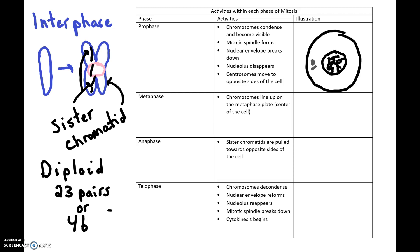Here are some of those centrioles — here's another pair of centrioles — and the mitotic spindle, also known as the spindle apparatus, begins to form from microtubules. It's ultimately going to be involved in separating the sister chromatids, pulling them to opposite sides of the cell — but that happens in anaphase. The third bullet: the nuclear envelope breaks down and the nucleolus disappears as well. The centrosomes — the region containing those centrioles — move to opposite sides of the cell.